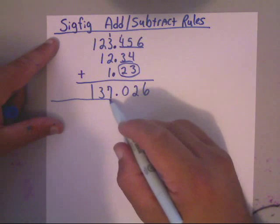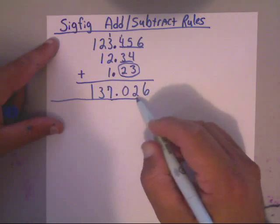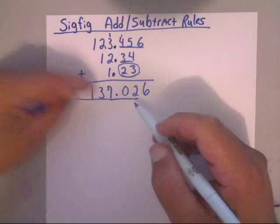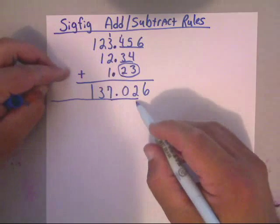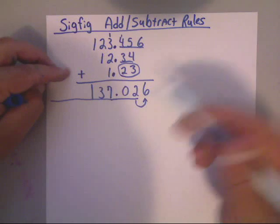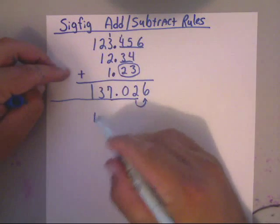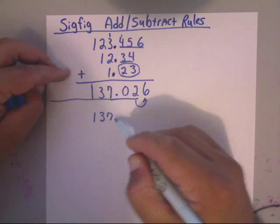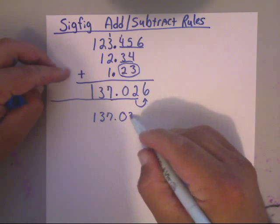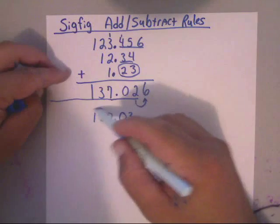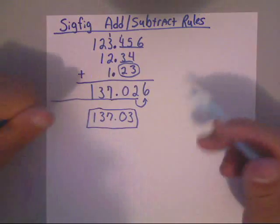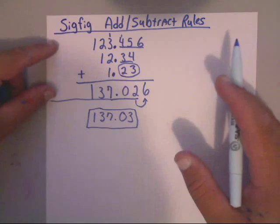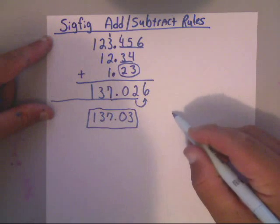Here's our decimals, all lined up nice and neat. Now the least amount of numbers behind the decimal is two, so we're going to keep the first two numbers behind our decimal. If there would have been eighteen numbers in the front here, we'd keep all eighteen, but we concentrate on the least amount behind the decimal. Look to the right, can you round that? Sure enough you can. So that's going to be 137.03, and that will be our final answer.